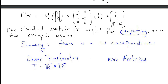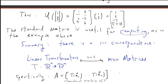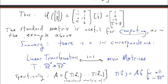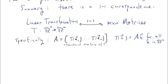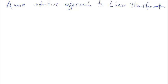In summary, there is a one-to-one correspondence between linear transformations from Rn into Rm and m by n matrices. Each linear transformation corresponds to a single matrix, and each matrix corresponds to a linear transformation. The matrix is given by the standard matrix of T. If we know how T behaves on a basis, we can form this standard matrix, and T of x equals A times x for all x in Rn.